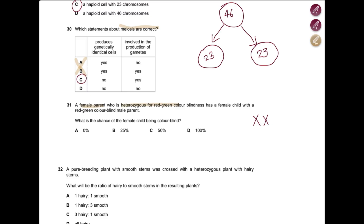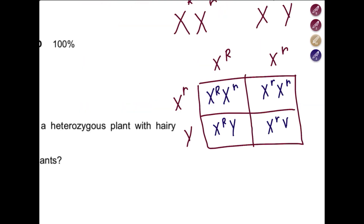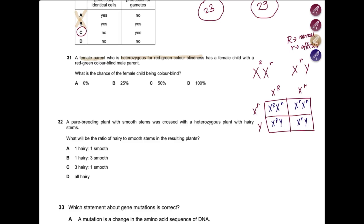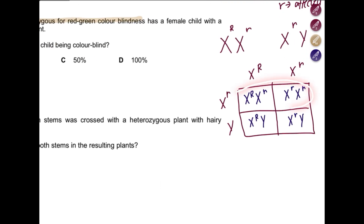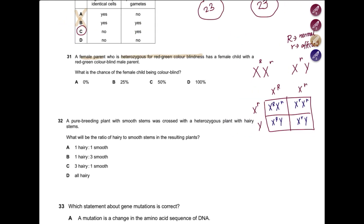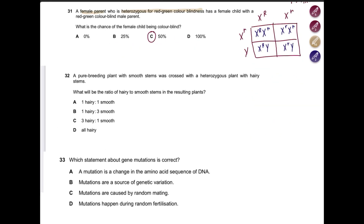A female parent XX who is heterozygous for red-green color blindness — let's give the letter R, where capital R is normal and small r is affected. The heterozygous female has capital R and small r. She has a female child with a red-green color blind male parent XY, who is affected. Drawing a Punnett square, what is the chance of the female child being color blind? Female children don't have the Y chromosome. Out of the two girls, one is color blind — so the chance is 50%. Answer: C.